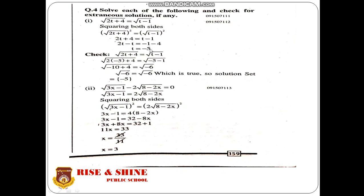Minus 1 and minus 4 both have the same sign, so minus 4 and minus 1 becomes minus 5. For the verification, we put t equals minus 5, replacing t by minus 5: 2 times 5 is 10, plus 4 gives under root of minus 6, and minus 5 minus 1 gives under root of minus 6. So under root minus 6 equals under root minus 6, which is true. Solution set equals {-5}. If left hand side does not equal right hand side in verification, then solution set does not exist and it becomes empty.